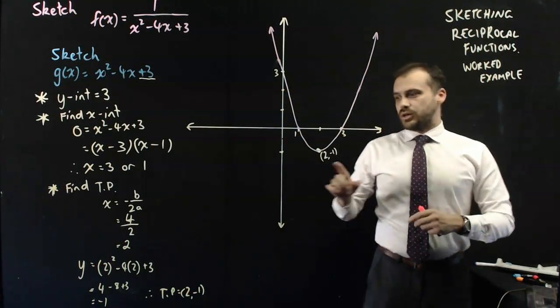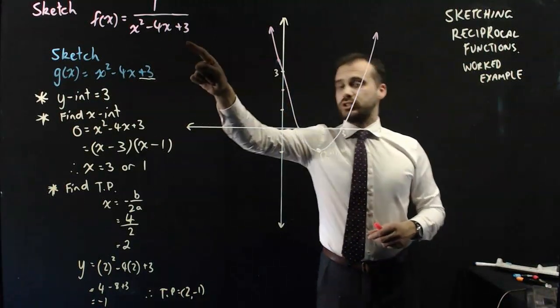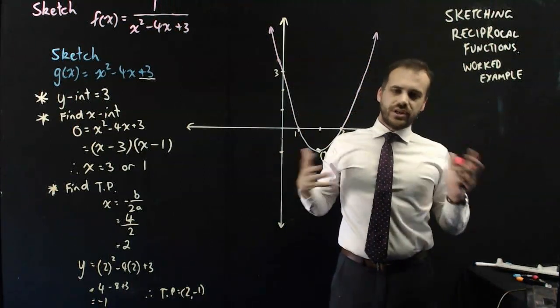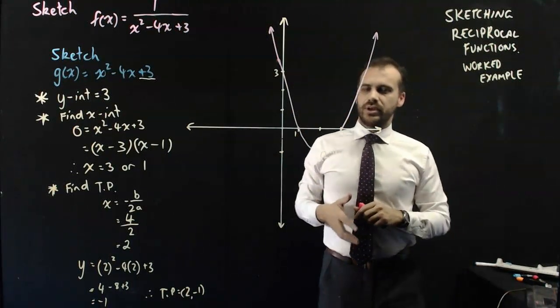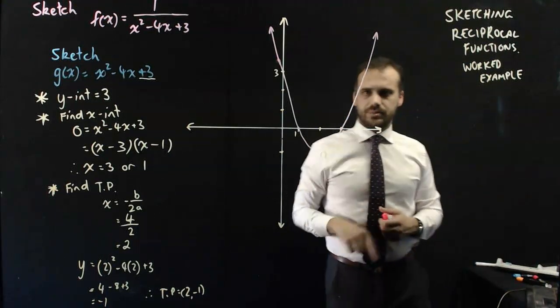Now, we need to consider not g(x), which is the bottom of our function, but we now need to think about the reciprocal of it. So there's a few key ideas here that you need to deal with. Probably the easiest one to deal with is these x-intercepts.